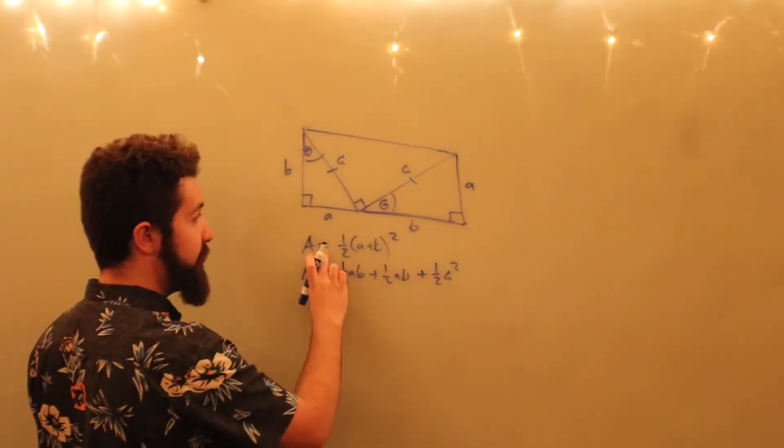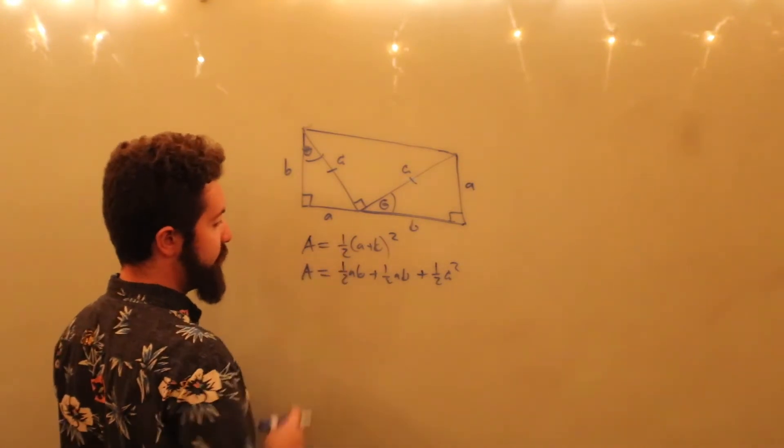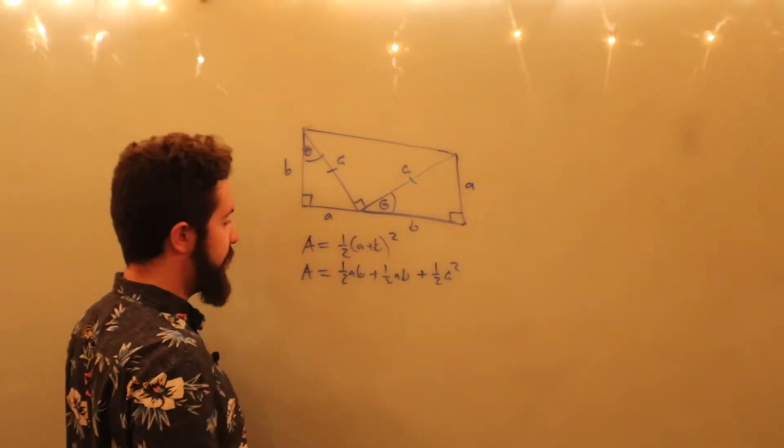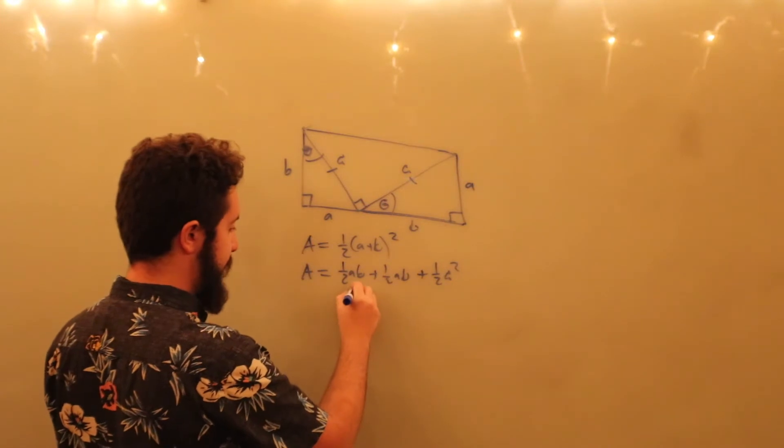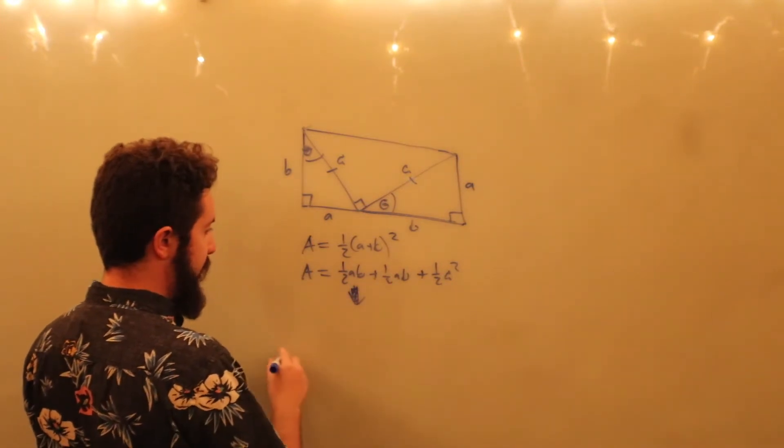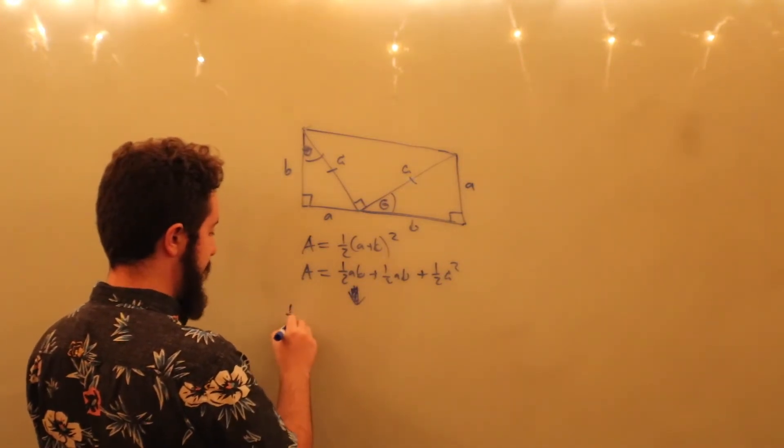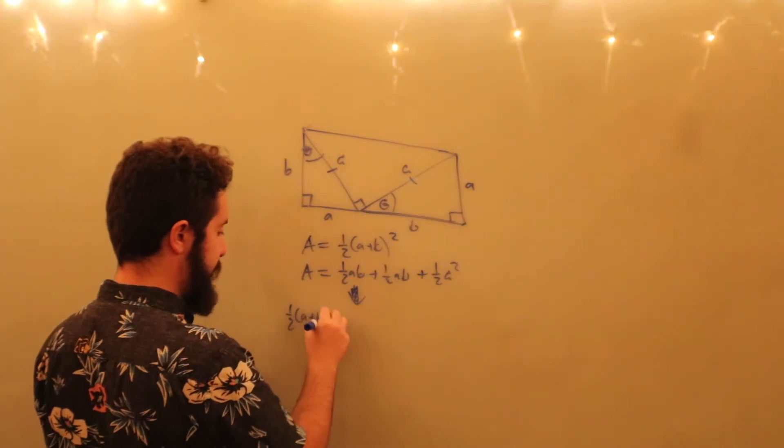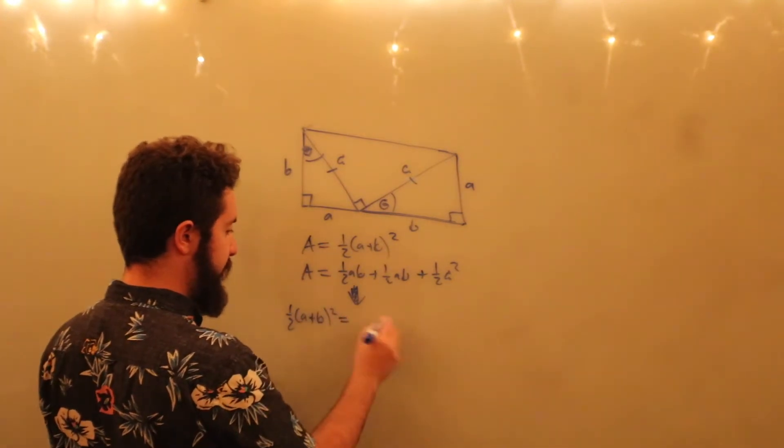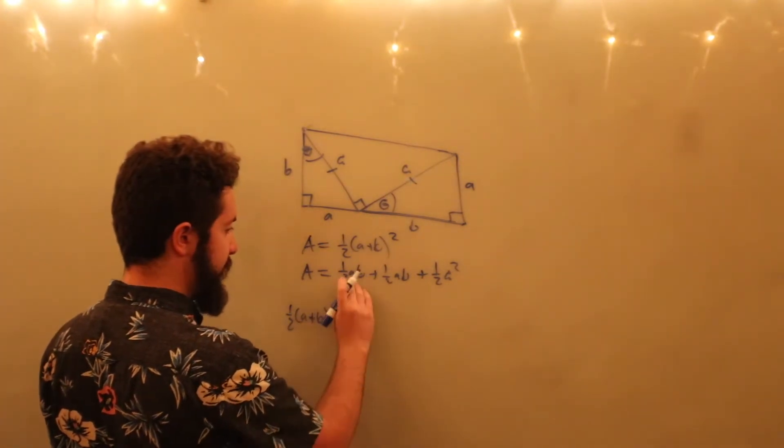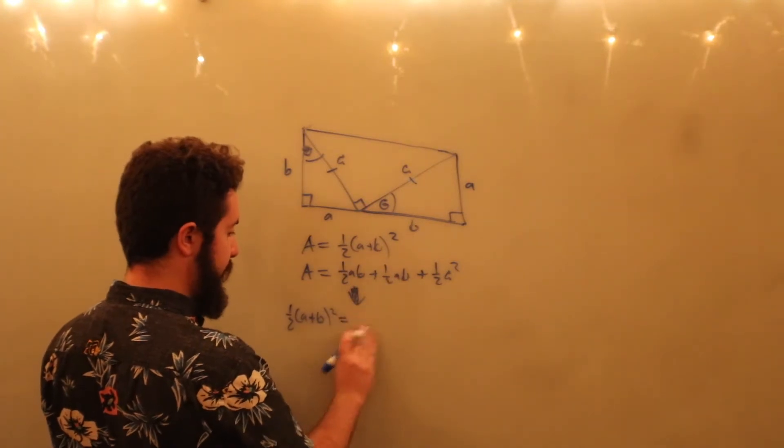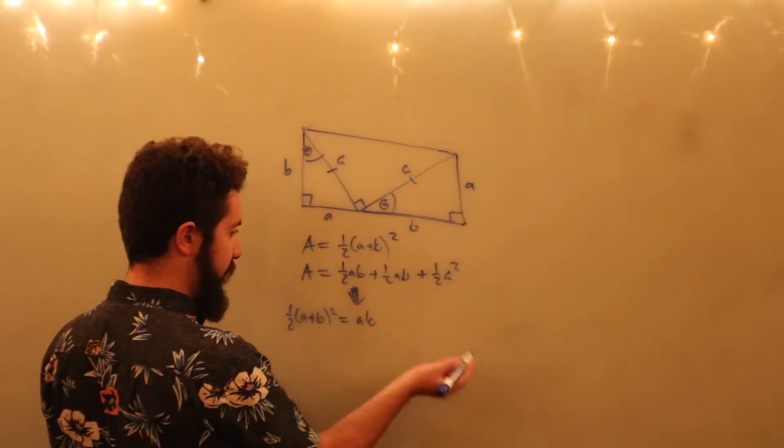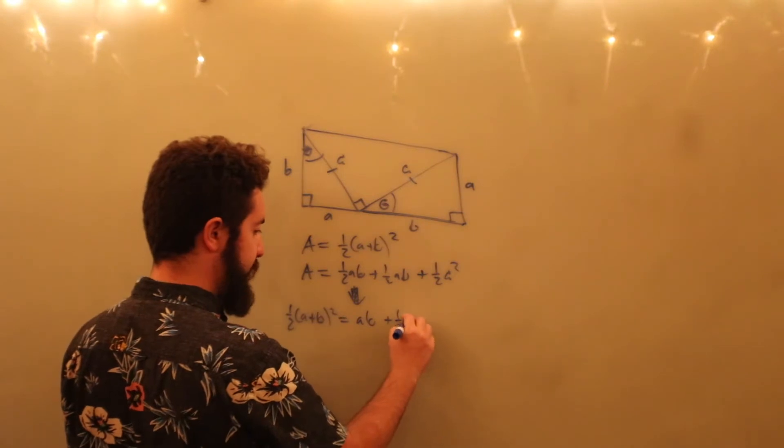Now, because the area of the trapezoid is equal to both of these expressions, we can set them equal to each other, and that's going to give us 1/2 times (A + B)² is equal to... Actually, let's combine these two, so just equals AB plus 1/2 C².